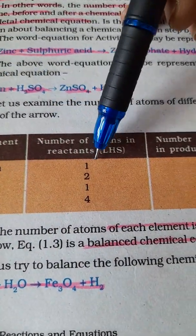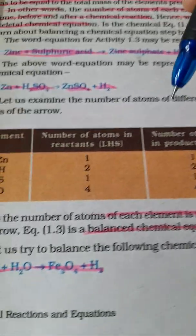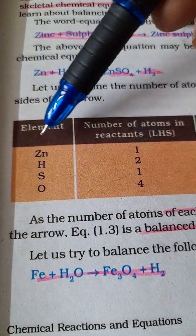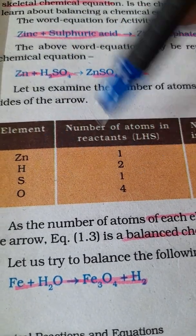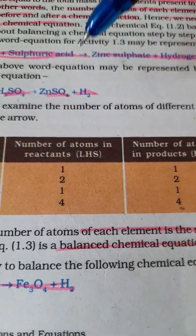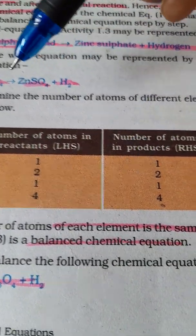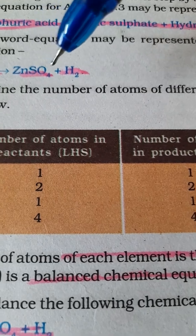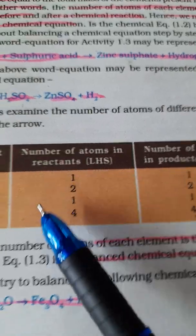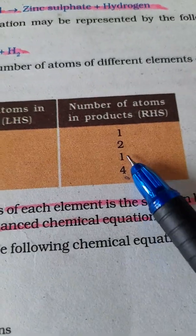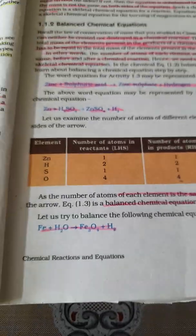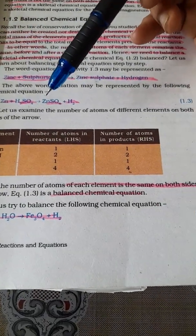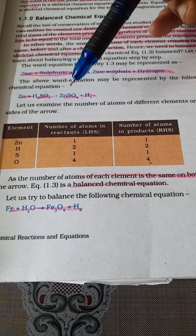On the reactant side (LHS) and product side (RHS): reactant side has zinc 1, hydrogen 2 atoms, sulfur 1, oxygen 4 atoms. Similarly on the right hand side: zinc is 1, hydrogen is 2, sulfur is 1, oxygen is 4.